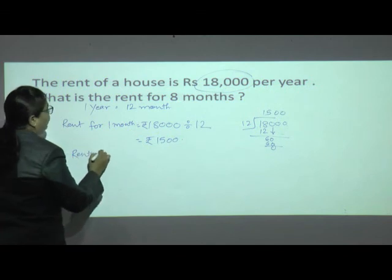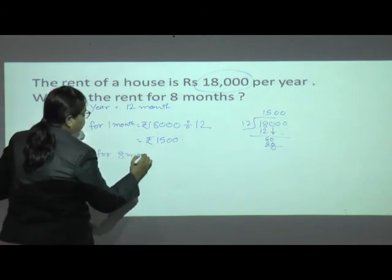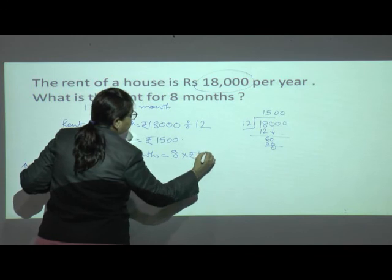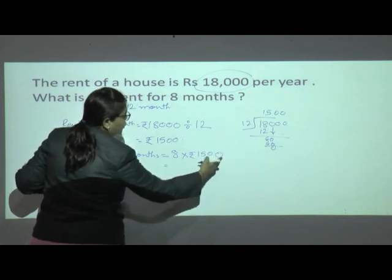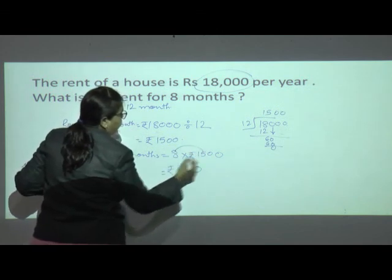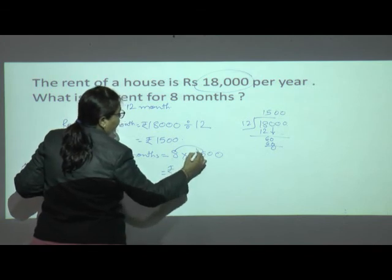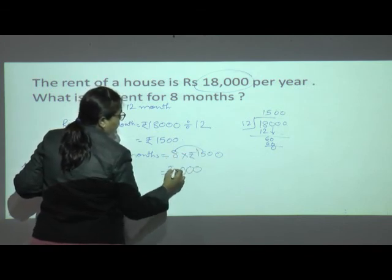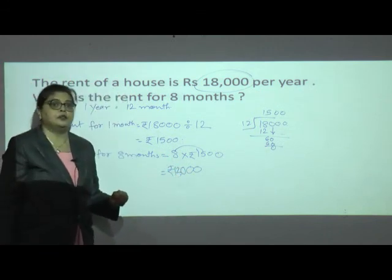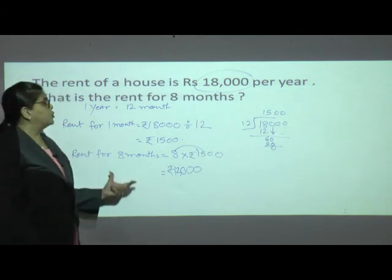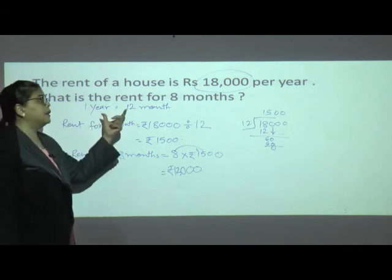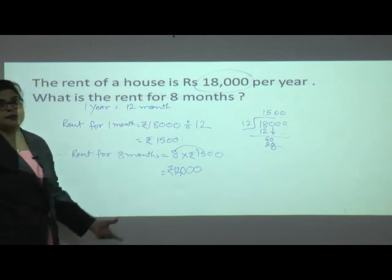Therefore, rent for 8 months is equal to 8 multiplied by rupees 1500. Write two zeros together. Now multiply: 8 fives are 40 — 4 carry; 8 ones are 8 plus 4 is 12. How much should I give? Rupees 12,000. Everyone understood how to calculate rent for a number of months using the unitary method.